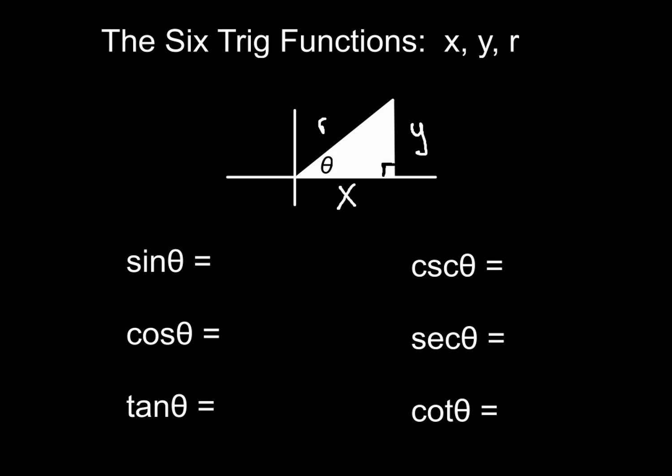The six trig functions using x, y, and r are going to come from a triangle that is drawn with theta closest to the origin. X is going to be your x-coordinate, y would be the height of your right triangle, and r is going to represent the radius if we're dealing with a circle, but also the hypotenuse.